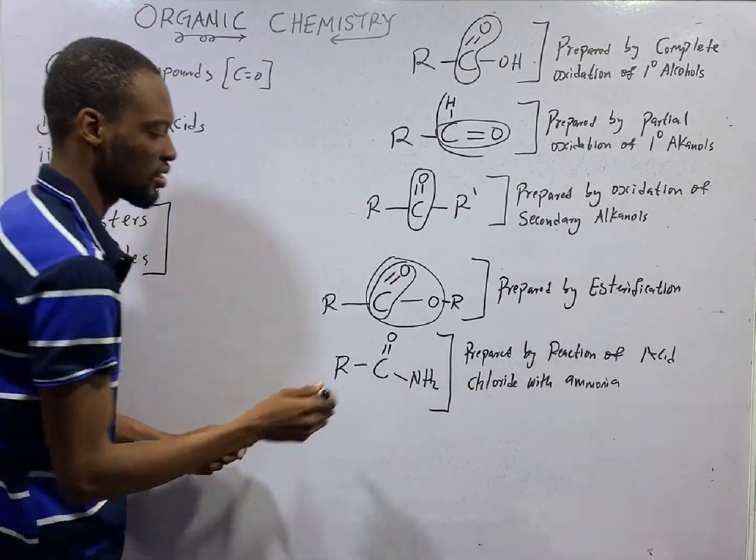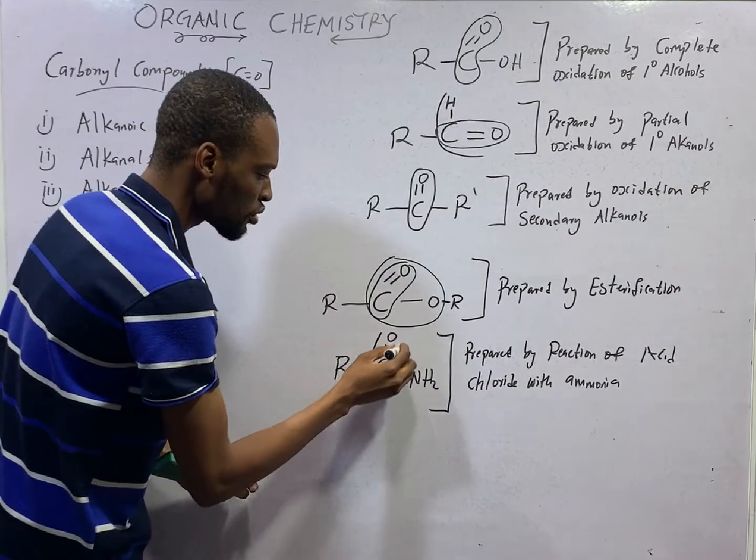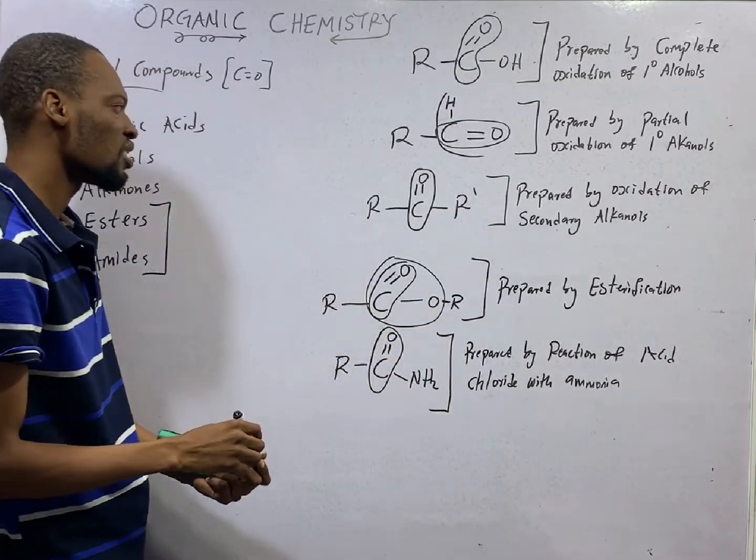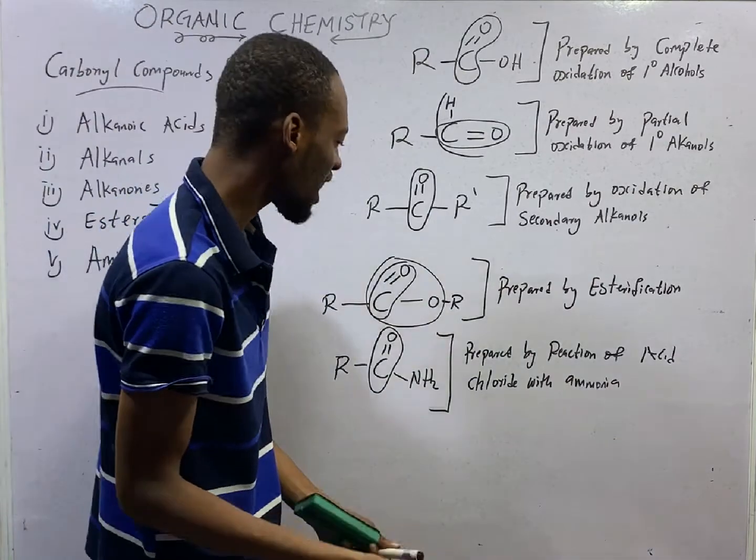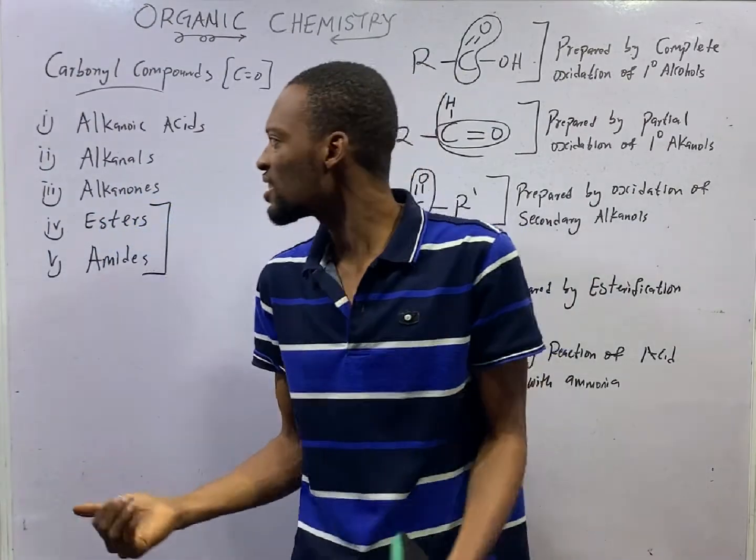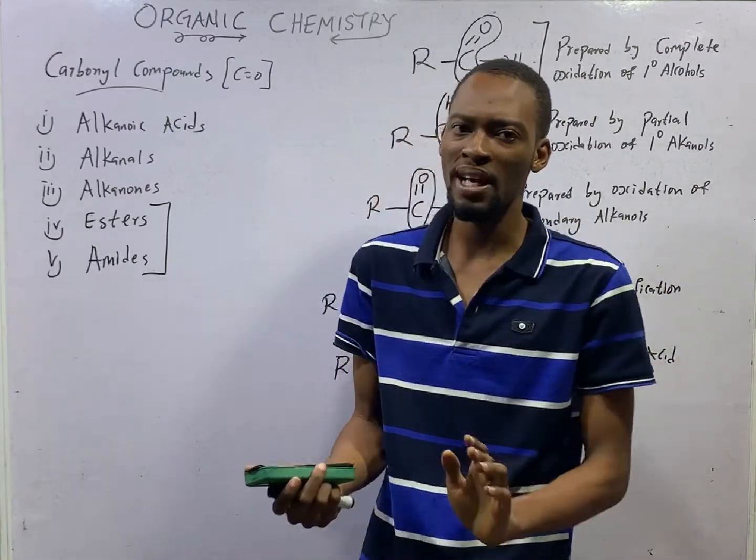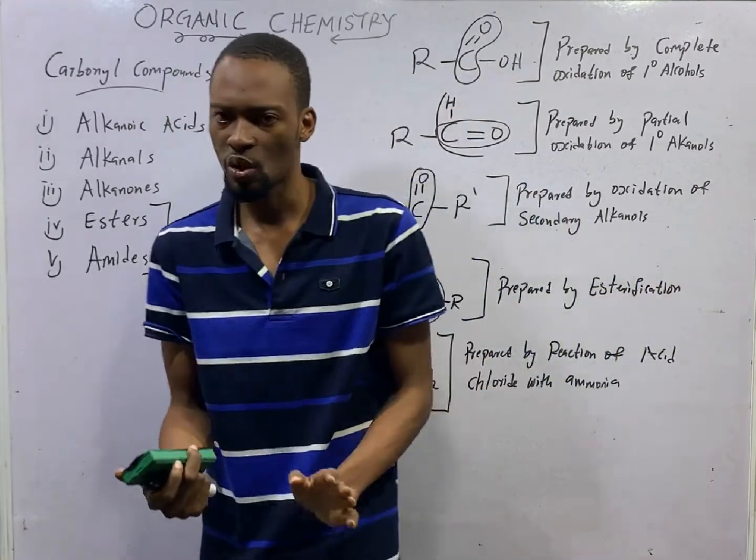For amides, there is C double bond to O. Then you see NH2 as well. So, without doubt, alkanoic acids, alkanals, alkanones, esters, and amides are carbonyl compounds.